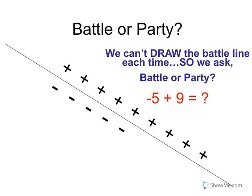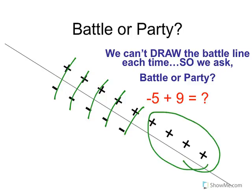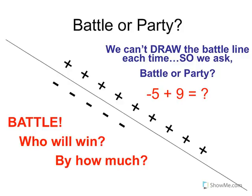Feel free to press pause at any time if you need to work out the problems on your own. We're not going to draw a line every single time we have a math problem, especially when the numbers get larger than ten. So we need to remember the rules. Whoever has more guys wins, and then you decide by how many are they going to win. There are still four good guys — four positivos alive. So the answer is positive four. It was a battle. Who will win? The positives won because there's more. By how many? Four.